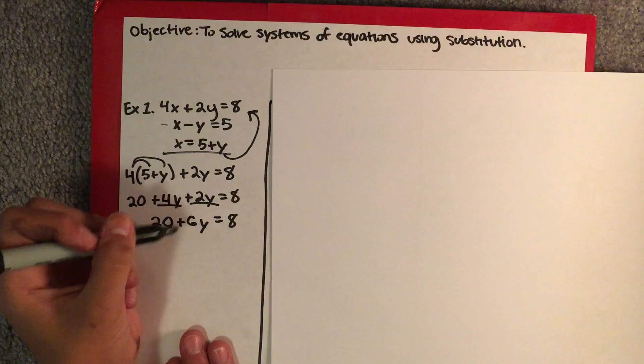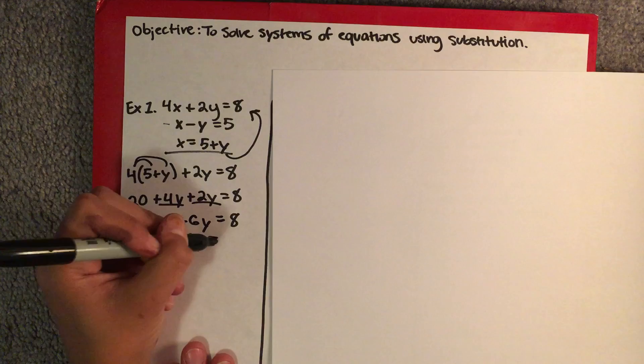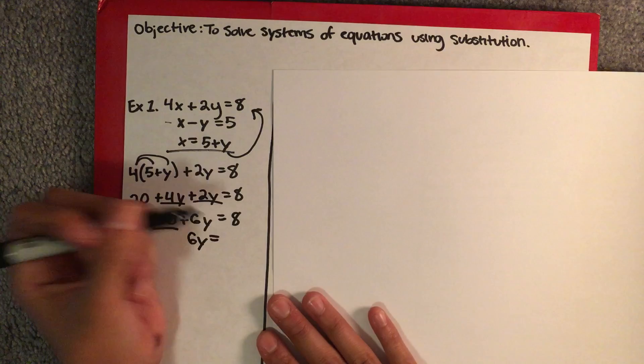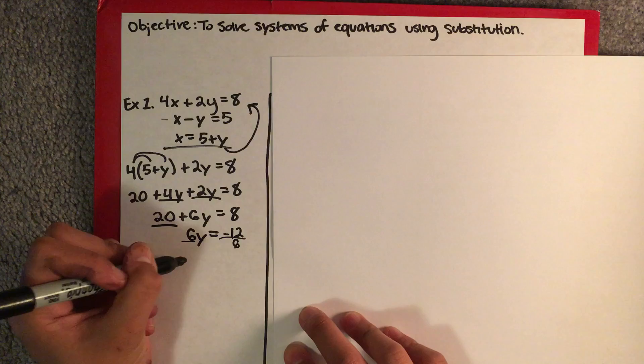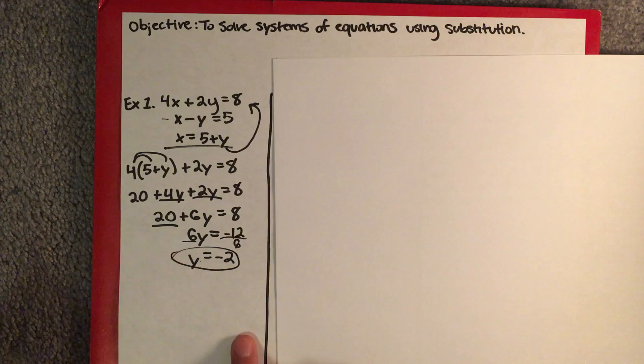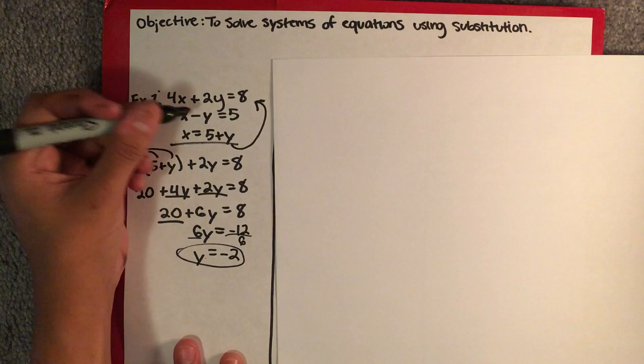You combine your like terms and you have 20 plus 6y is equal to 8. Subtract your 20 over — remember you're trying to isolate your y — and you have 6y is equal to negative 12. Divide by 6, and you have y is equal to negative 2.